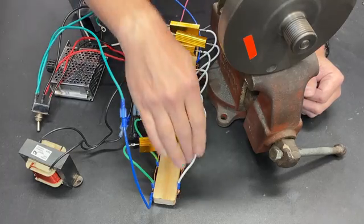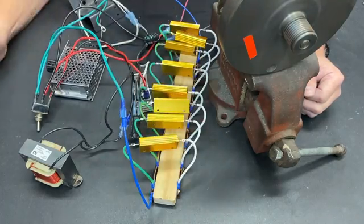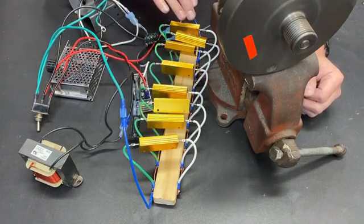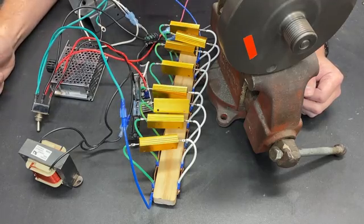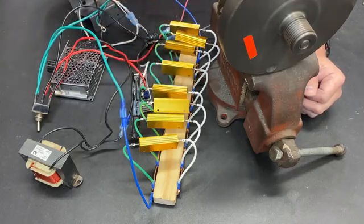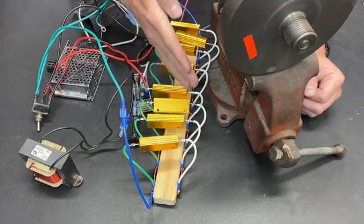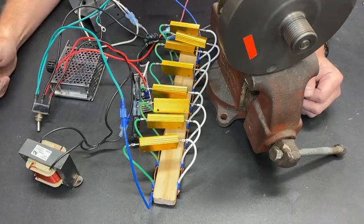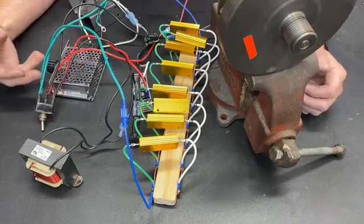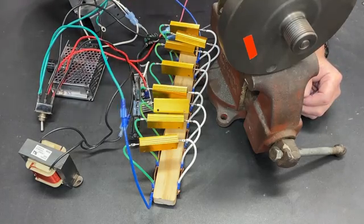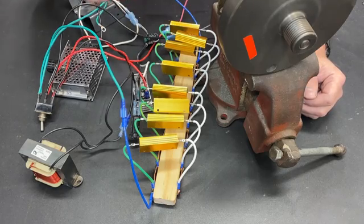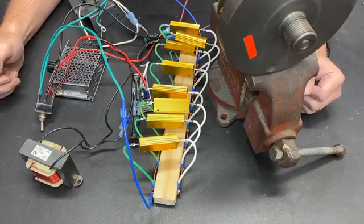Then I'm going to disconnect one resistor so that it is 700 watts and do the same experiment. Then 600 watts, then 500 watts. We're going to just keep coming down until one of these resistors fails. At that point, we'll know what the bare minimum requirement is.